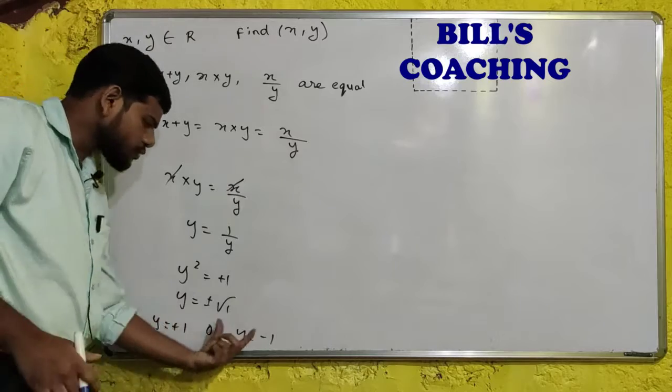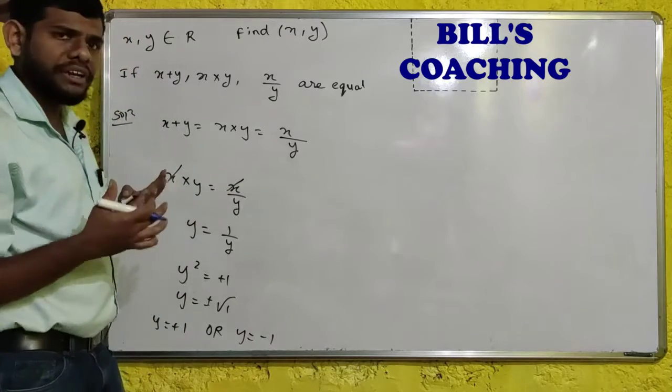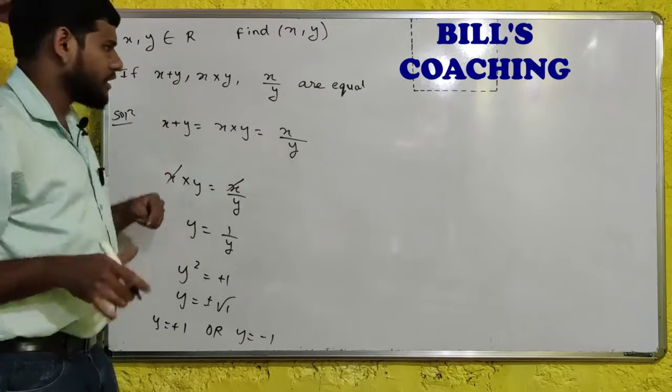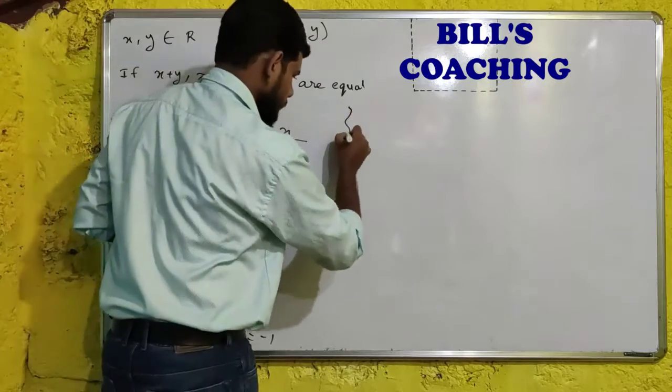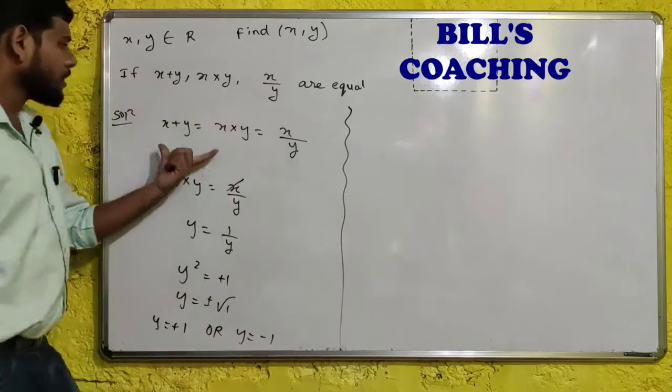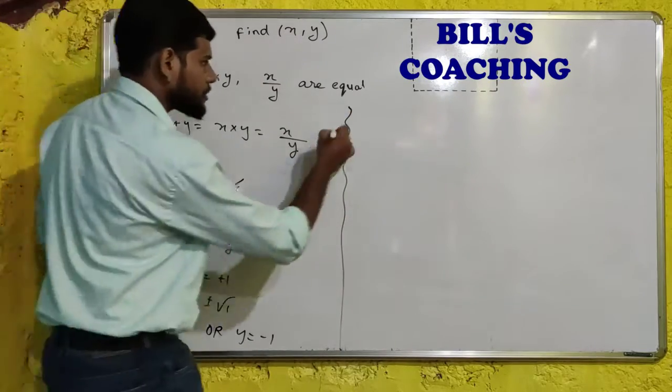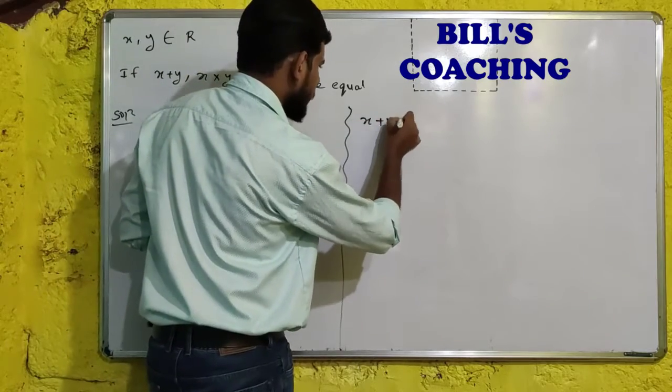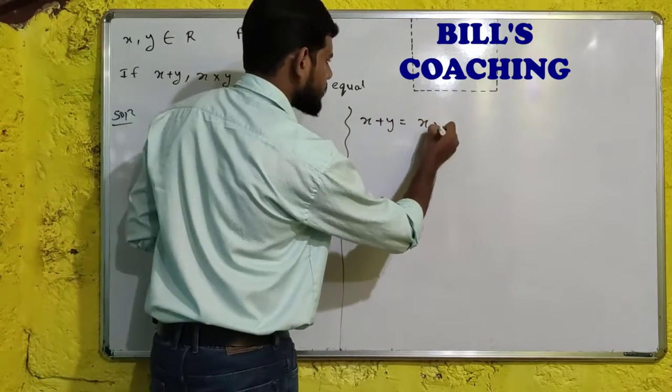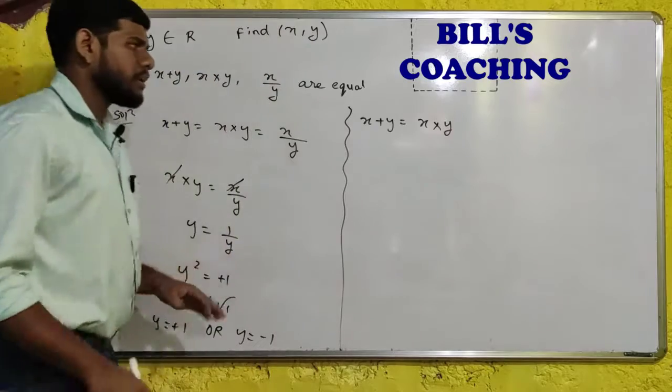Now, with these two values, either we can get two pairs or we can get one pair. Let us verify now. We will take this equation now, which is x plus y is equal to x multiplied by y.